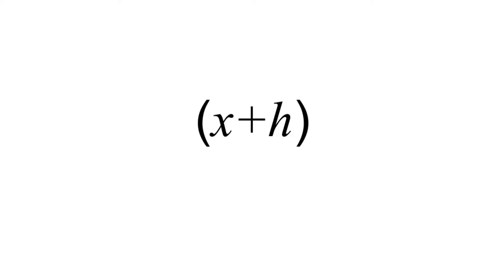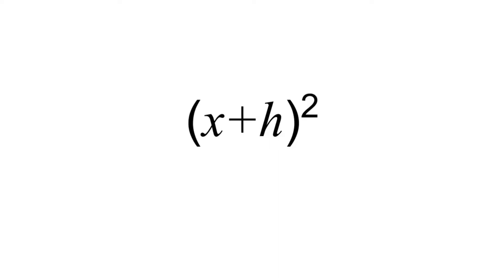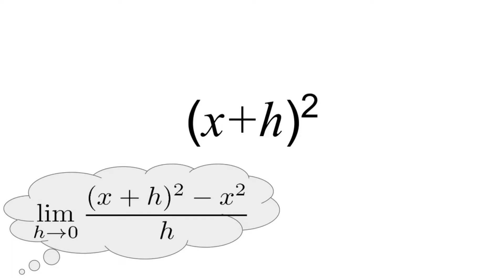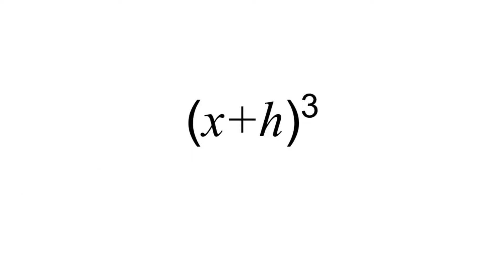You've seen that often we like to look at quantities that look like x plus h — sometimes x plus h squared, as we saw in the previous example. This appears in quantities like our definition of the derivative. We have x plus a very small quantity h, and we want to know how to expand that to higher powers, like x plus h cubed, or x plus h to the n, with an arbitrary exponent.